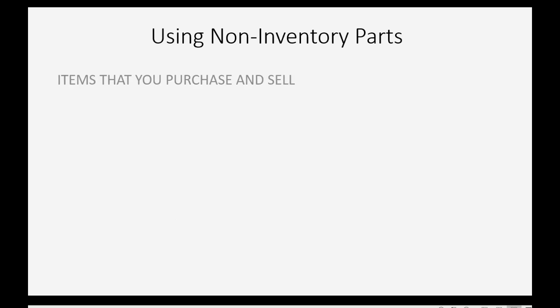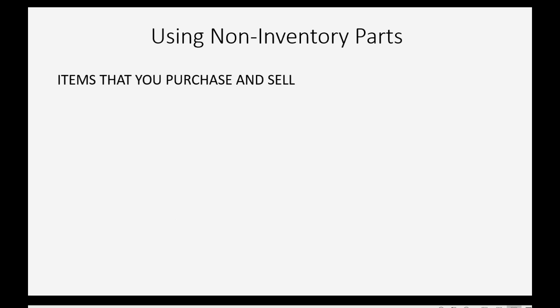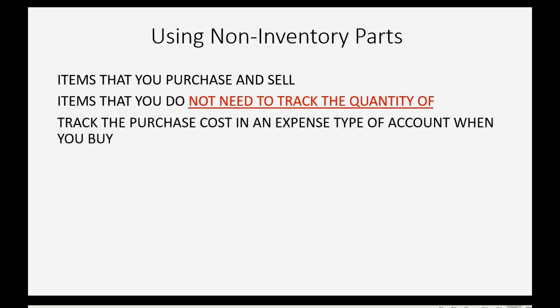Non-inventory parts are items that you both purchase and sell, just like regular inventory. They're items that you do not need to track the quantity of. You can track the purchase cost in an expense type of account when you buy the items.